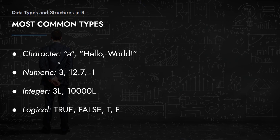Let's start with one of the most basic common data types in R: the character. This is what would most commonly be referred to as a string in other programming languages such as Java. In R, strings are called characters. Here are a couple of examples — 'hello world' or any other string within quotes. You can use single quotes as well as double quotes to represent character data types.